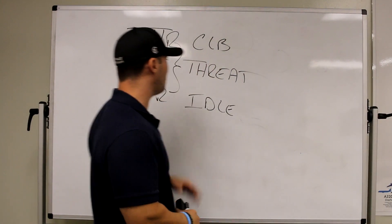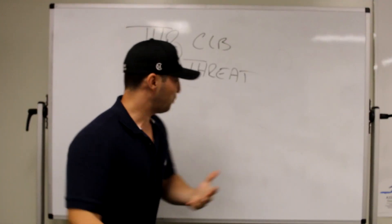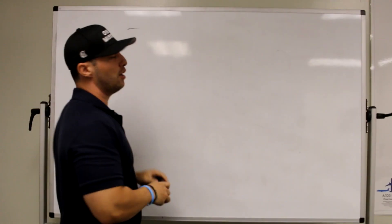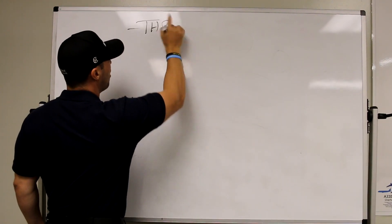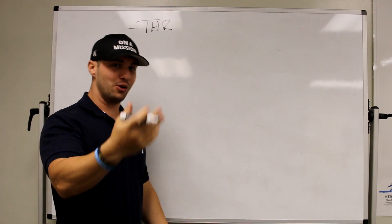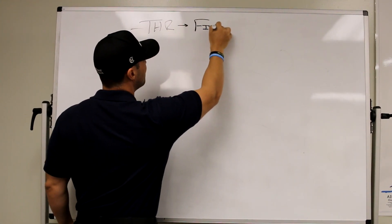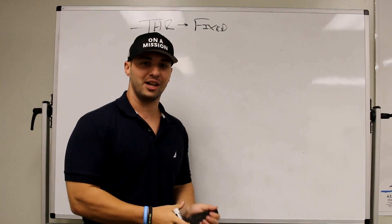Let me grab my handy dandy eraser. Now the reason these are threats or should be thought of as threats is because they are fixed thrust modes. THR in column one of the FMA, which happens to be your auto thrust column, is a fixed thrust mode. What that means is exactly what it sounds like. Your thrust is fixed.